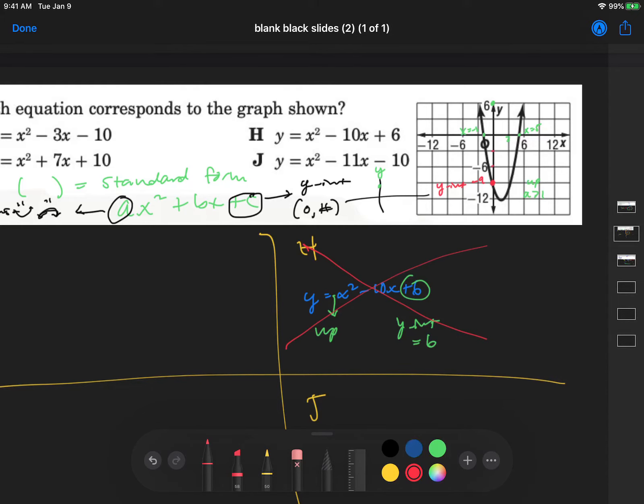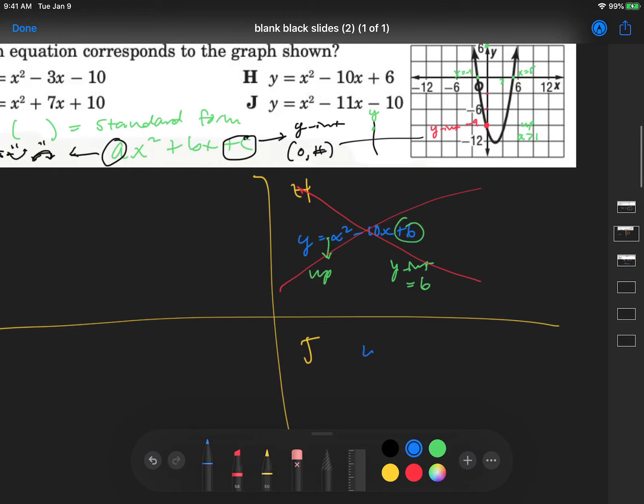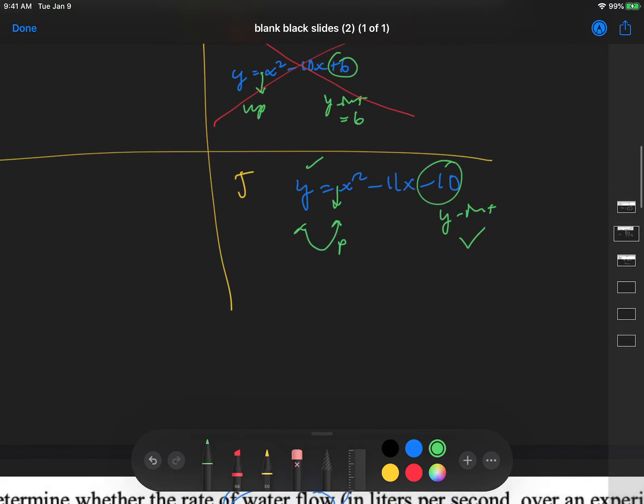Let's go to J. y equals x squared minus 11x minus 10. This is promising. This one has a y-intercept that is negative 10. That's good. This one opens up. So that's good. Now we have to do a little bit more work and figure out its x-intercept. So let's see if we can factor this one.